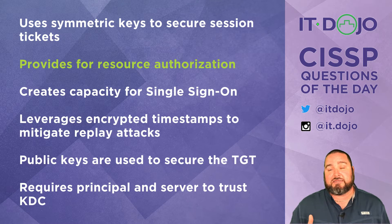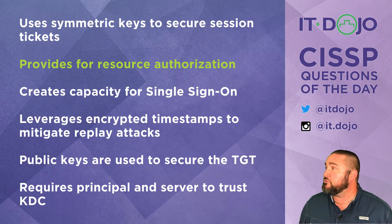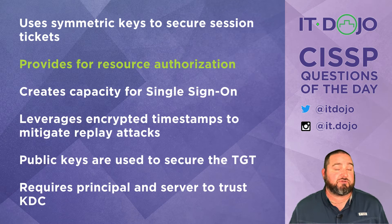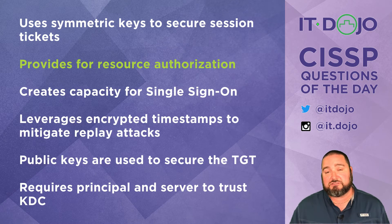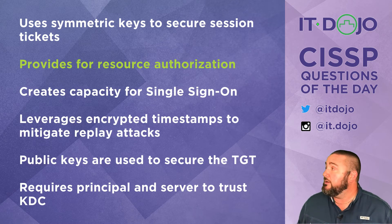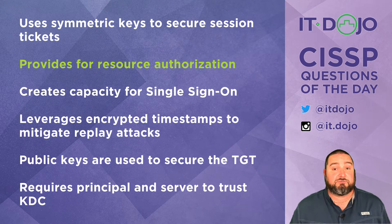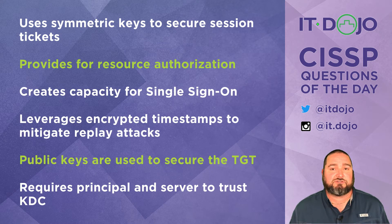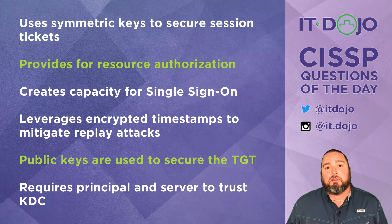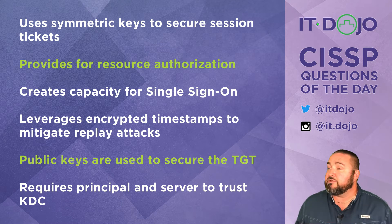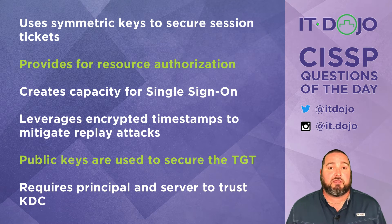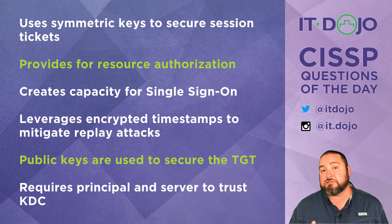That is not true. The ticket-granting ticket is actually secured with a secret that the Kerberos server keeps to itself, and that secret is a symmetric secret — so that is not right, which means it IS the right answer on this question. The last answer says it requires the principal and the server to trust the key distribution center — that is a true statement.